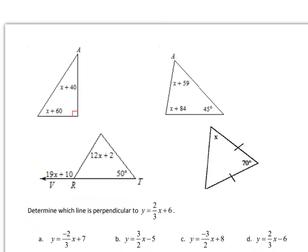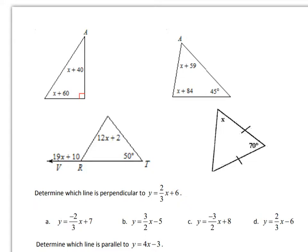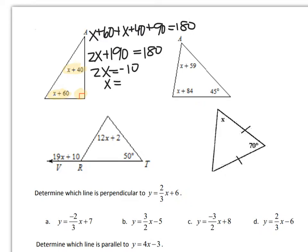Also in this unit that seems like it was forever ago, we talked about the interior angles of a triangle. So what we learned is that the angles of a triangle add to 180. So I have x plus 60 plus 90 plus x plus 40 equals 180. So 2x plus 190 equals 180, so 2x equals negative 10.